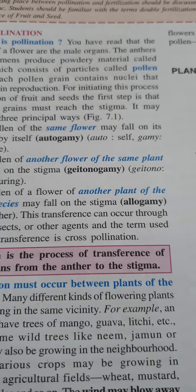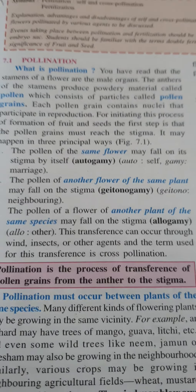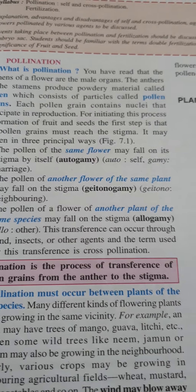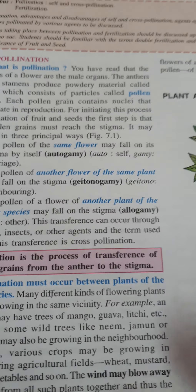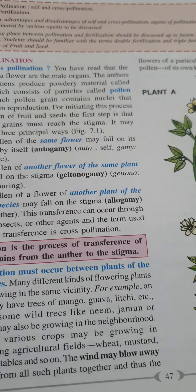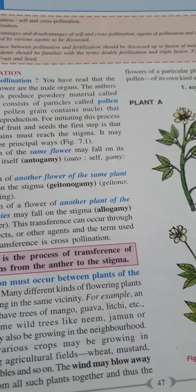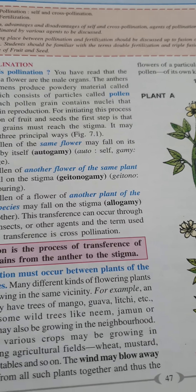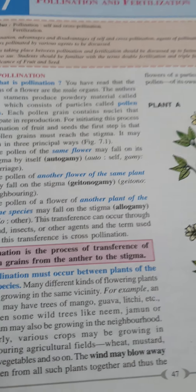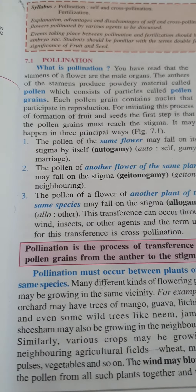Autogamy ka matlab hota hai — auto means self and gamy means marriage, yaani ki aapas me shadi. In this type of self-pollination, the transfer of pollen grains from the anther to the stigma takes place within the same flower — ek hi flower mein, same flower mein. Yaani ki self marriage.